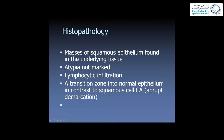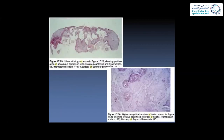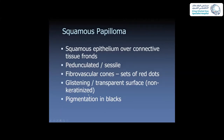Pseudoepitheliomatous hyperplasia consists of masses of squamous epithelium in the underlying tissue. Atypia is not marked, and sometimes there is inflammation with lymphocytic infiltration. There is a transition zone into normal epithelium, which is not present in squamous cell carcinoma — this is the differentiating feature. Invasive acanthosis with fossil keratin may be present deeper in the epithelium.